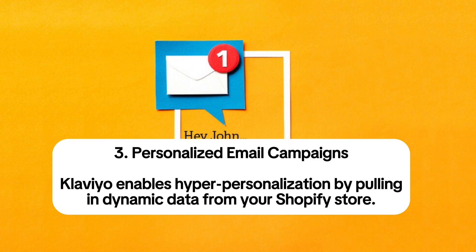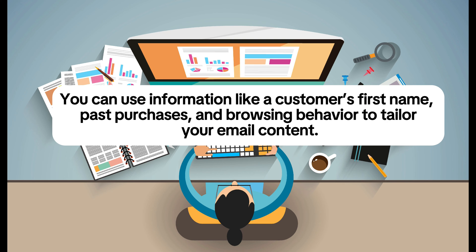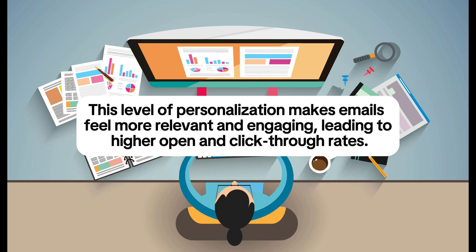Key feature 3: Personalized email campaigns. Klaviyo enables hyper-personalization by pulling in dynamic data from your Shopify store. You can use information like a customer's first name, past purchases, and browsing behavior to tailor your email content. This level of personalization makes emails feel more relevant and engaging, leading to higher open and click-through rates.